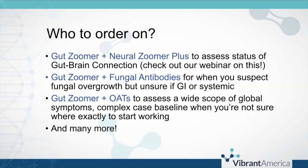Another common combination is GutZoomer and Neural Zoomer Plus — looking at the gut-brain connection. If you've got folks with lots of neurological symptoms or inflammation, you definitely want to take a look at the gut at some point, because many of those things — we tie leaky gut and leaky brain together. Many of those dysfunctional processes are similar in nature as far as what the trigger is.